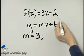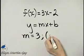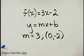And also notice b is negative 2, so that means we have the y-intercept of 0, negative 2.